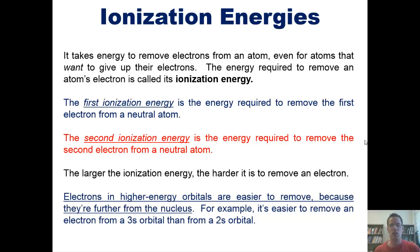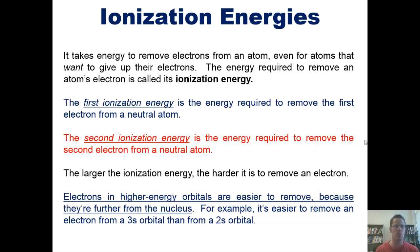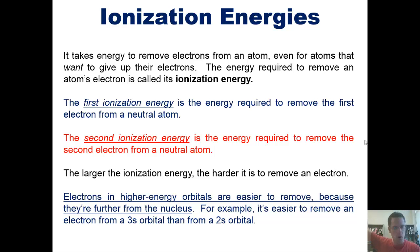Electrons in higher energy orbitals are further from the nucleus, so they're easier to remove. For example, it's easier to remove an electron from a 3s orbital than from a 2s orbital, because a 3s orbital electron is further away from the protons in the nucleus that are attracting it than a 2s orbital electron.